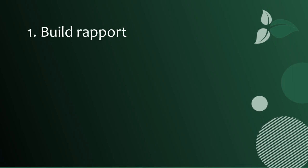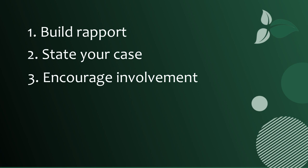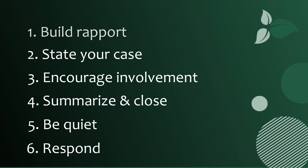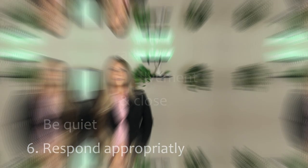Step four is knowing how to ask. Face-to-face is always best, and the meeting should be in an environment where you will not be interrupted — your prospect's office or on-site at your agency. A restaurant or coffee shop has too many distractions. There are six steps to a model solicitation: one, build rapport — sit back, relax, engage in friendly chit-chat about things your donor is interested in; two, state your case with sincerity and enthusiasm, focusing on the need, impact, and outcomes; three, encourage involvement — ask their opinion and ask for what you need; four, summarize the benefits and impacts and close with your elevator pitch asking for the gift; five, be quiet — sit back and let them respond, even if it takes a while; and six, respond appropriately and answer any questions or objections.